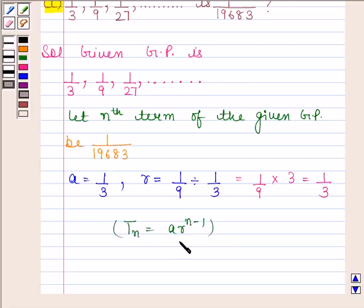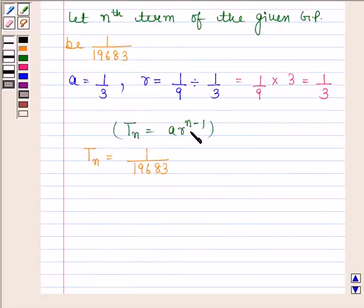Now, in this question, we have assumed that nth term, that is Tn, is equal to 1 by 19683. Tn is equal to A into R to the power n minus 1. So this implies A into R to the power n minus 1 is equal to 1 by 19683.